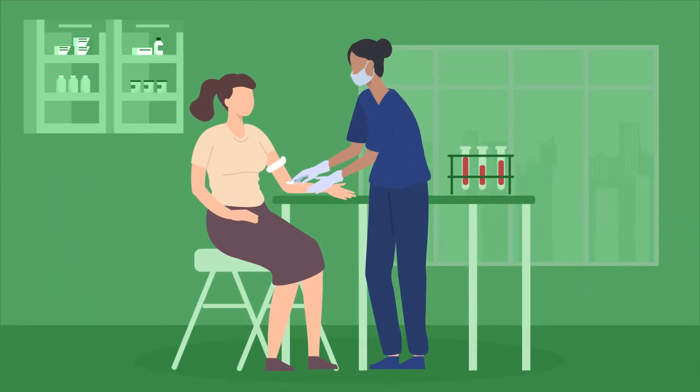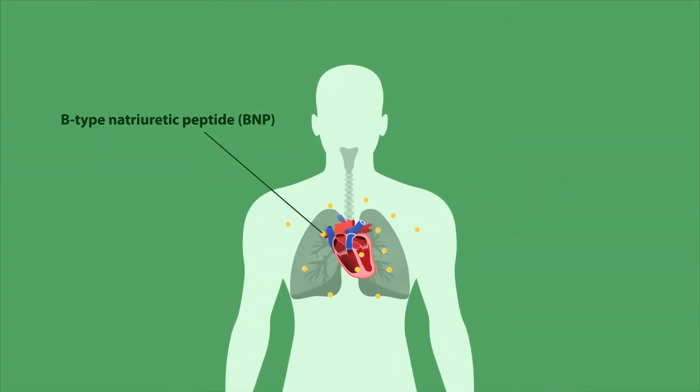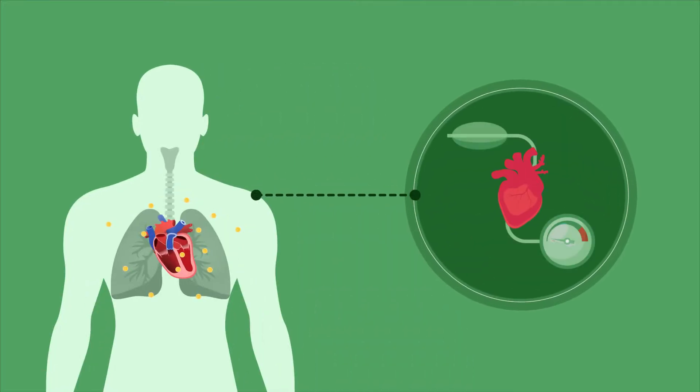This includes blood test measurements of beta-natriuretic peptide, BNP, a hormone produced by the heart in response to the abnormal stretching of the heart muscle. BNP is strongly correlated with right atrial pressure and ventricular dysfunction.